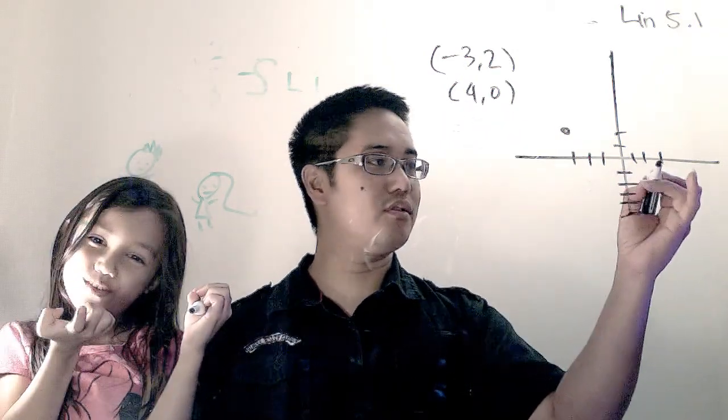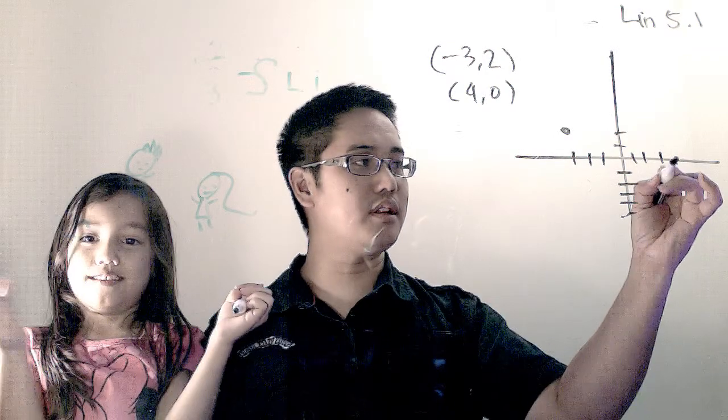There's four, comma, zero, which is one, two, three, four, comma, zero, so that's this point right here.